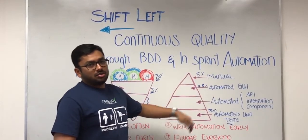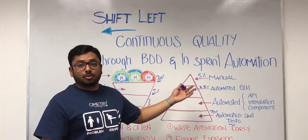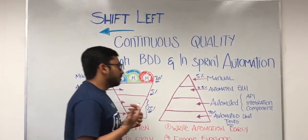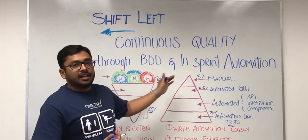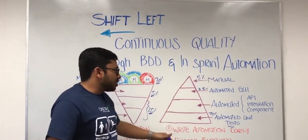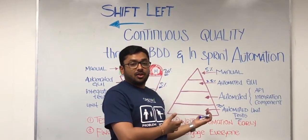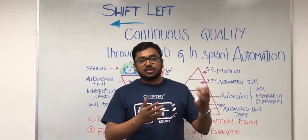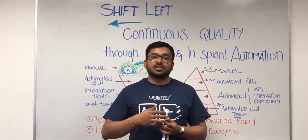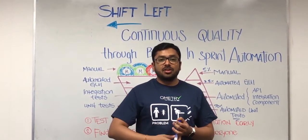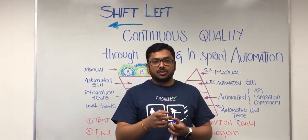That's where shift left is changing the whole dynamics — driving higher ROI through automation and reducing time to market. Concepts like BDD and instrument automation support this whole shift left continuous quality approach. Stay tuned as we cover how BDD and instrument automation drive shift left continuous quality in our subsequent videos. Thank you.